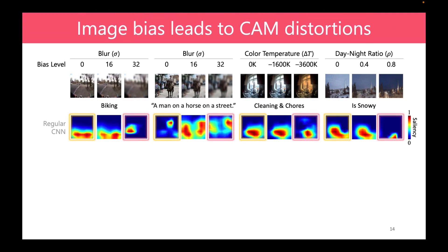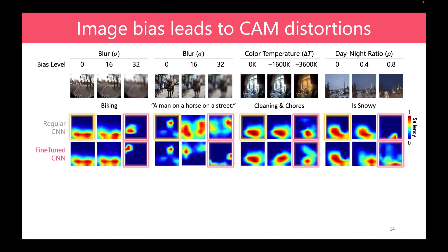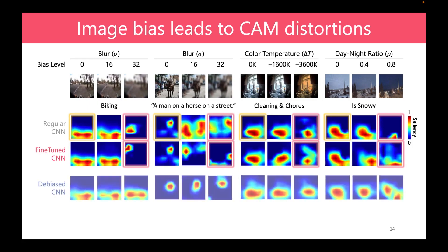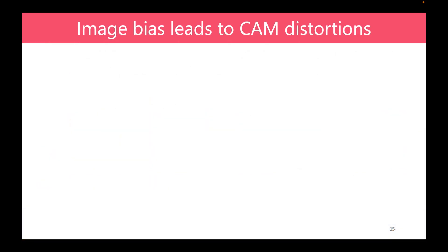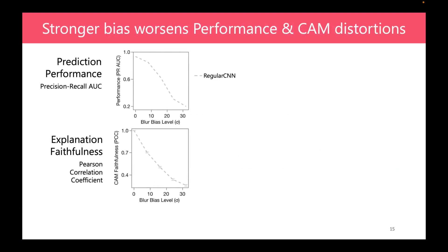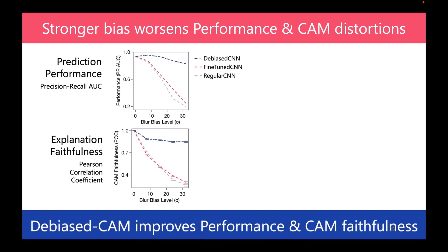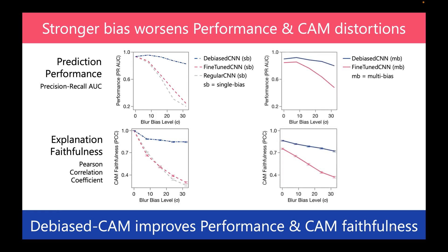This is still problematic if we only fine-tune the CNN model on biased images with their labels. Fortunately, Debiased CAM can recover the explanation faithfully — even for strongly biased images, debiased CAMs are similar to unbiased CAMs. As seen here, both prediction performance and explanation faithfulness degrade with increasing bias level in the base model. Fine-tuning with simple data augmentation can hardly handle this, especially for saliency map faithfulness. In contrast, our debiased training approach improves both prediction performance and explanation faithfulness, under single-bias and multi-bias settings.